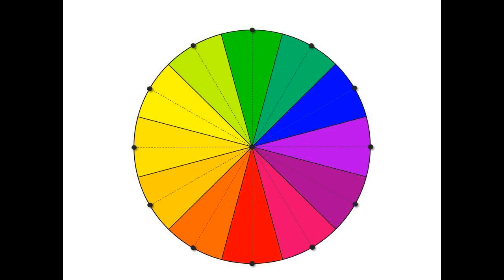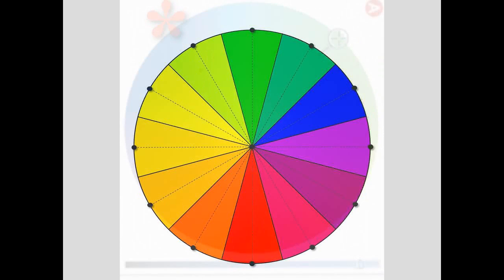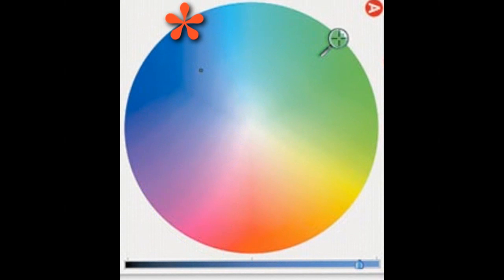Colors have positive and negative implications. For example, red is associated with energy or, conversely, aggression. Blue can suggest cool elegance or depressing sadness. Violet is the hue of playful fantasy as well as nightmares and madness.